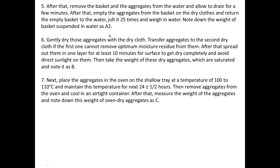After that, spread the aggregates out in one layer for at least 10 minutes for the surface to dry completely, avoiding direct sunlight. Then take the weight of these saturated surface-dry aggregates and note it as B. Next, place the aggregates in the oven on a shallow tray at a temperature of 100 to 110 degrees Celsius and maintain this temperature for 24 plus or minus 1 hour (i.e., 23.5 to 24.5 hours). Then remove aggregates from the oven and cool in an airtight container. Measure the weight of the oven-dry aggregates and note this down as C.